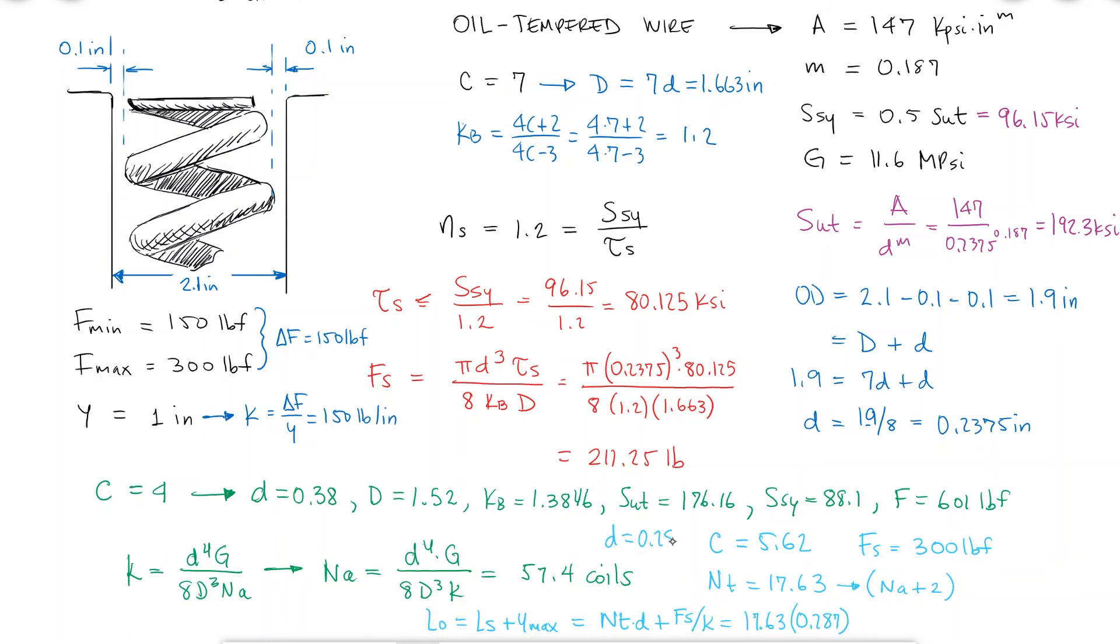To fully describe this spring, we would need the free length, but again, it would be less than ideal, and not only because the total number of coils is more than 15, but because like we studied in the main video, you don't want your operation force to be more than seven-eighths of the force required to bring the spring to its solid length.